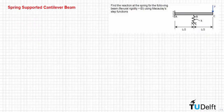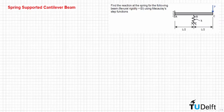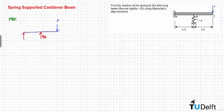In this problem we have a cantilever beam which is supported by a spring at point B, and we have a point load applied at point C with magnitude P. We need to find the reaction at this spring using Macaulay's deflection function. As you can see here, we have the vertical reaction at the wall Ra, the reaction moment Ma, and we also have the spring reaction at B.